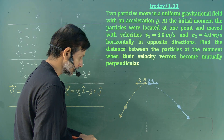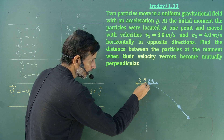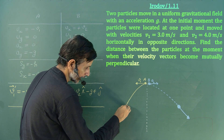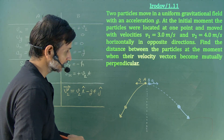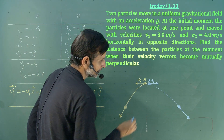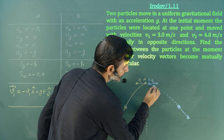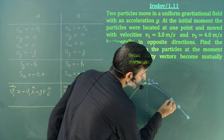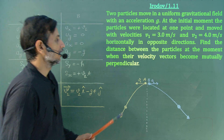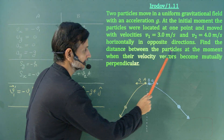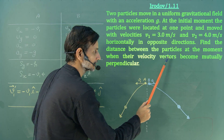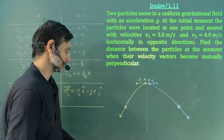When we throw two particles horizontally in a gravitational field, each particle follows a projectile path. The second particle also follows a projectile path but with a different velocity, so its path is different. We need to find the distance between the particles at the moment when their velocity vectors become mutually perpendicular.